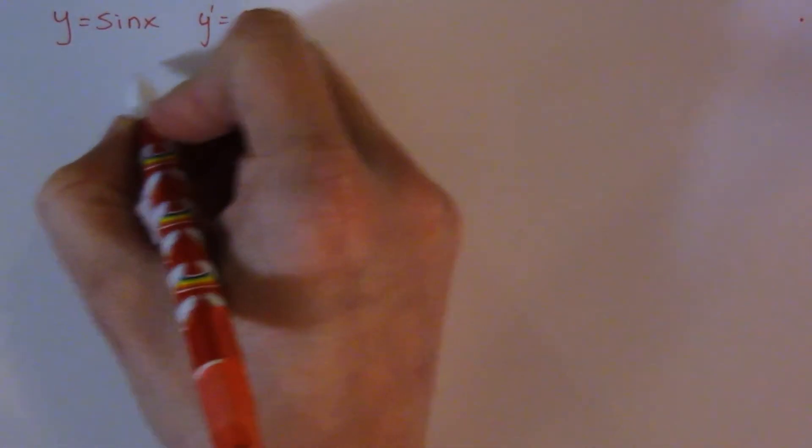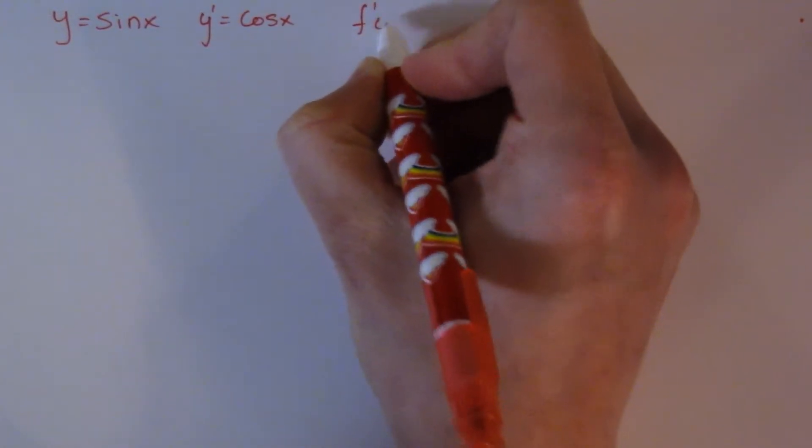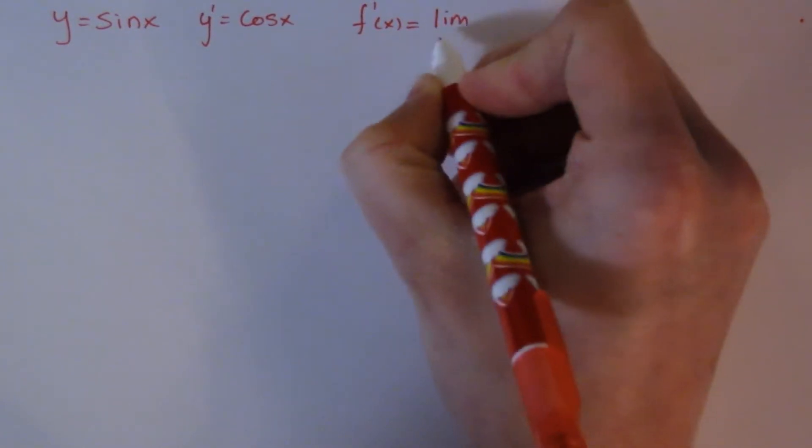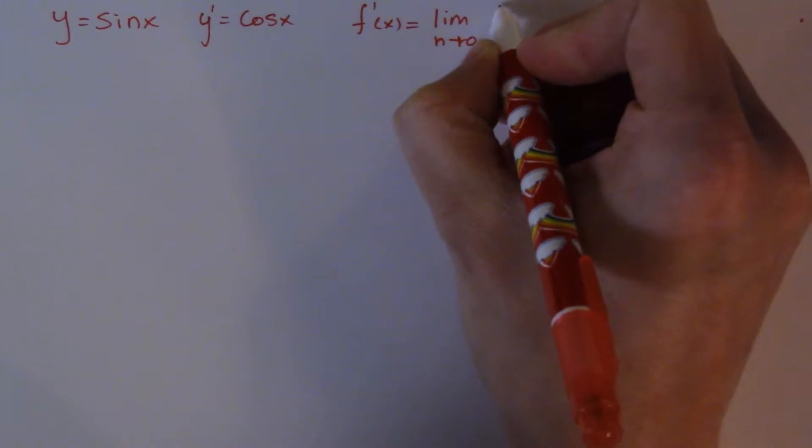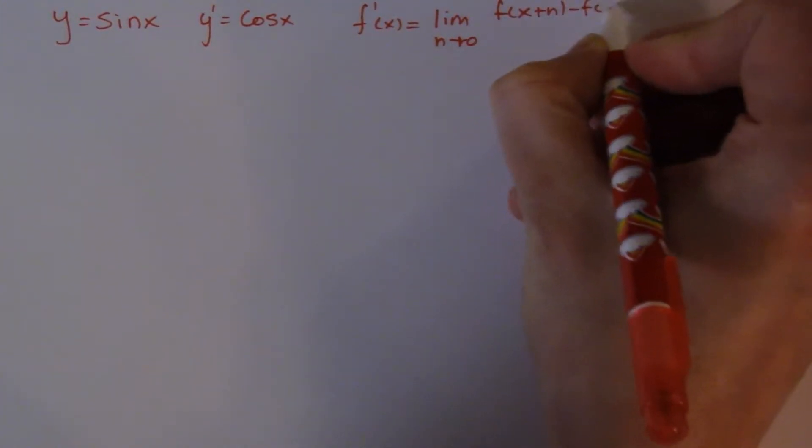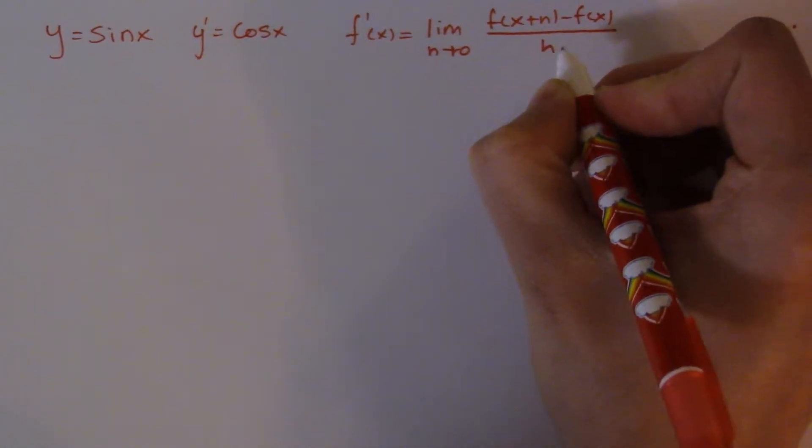Generally, the place to start for these proofs is the definition of derivative. So f prime is equal to the limit, as h goes to zero, of f of x plus h minus f of x all over h. So there it is.